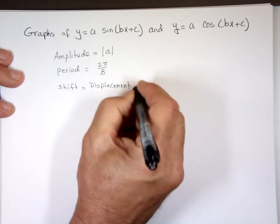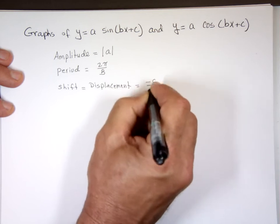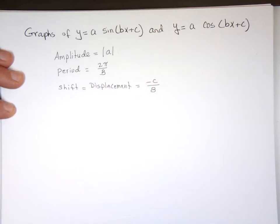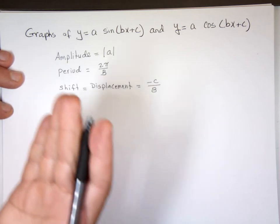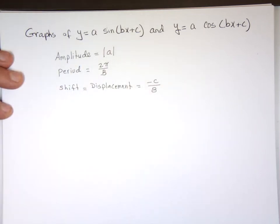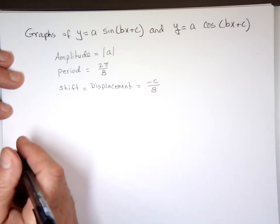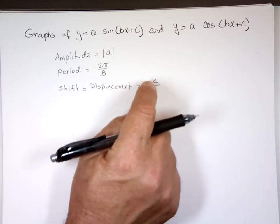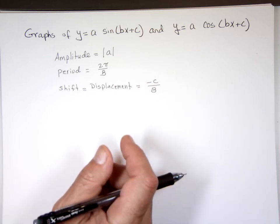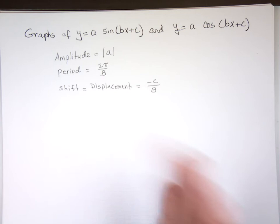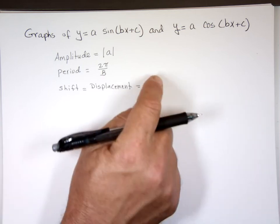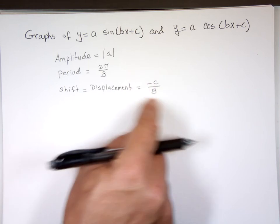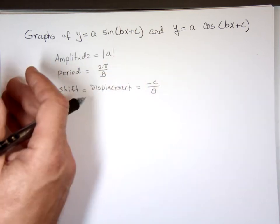The displacement is controlled by C — it's actually negative C over B. If it's negative, you start to the left of the y-axis; if it's positive, you start to the right. So if C is negative, negative times negative is positive, giving a positive shift to the right. If this number is positive, the value will be negative and you'll have a negative shift — you're starting backward.